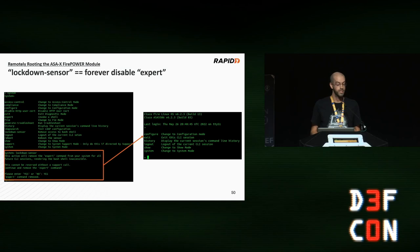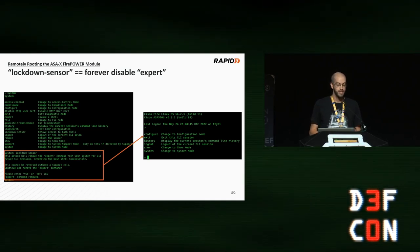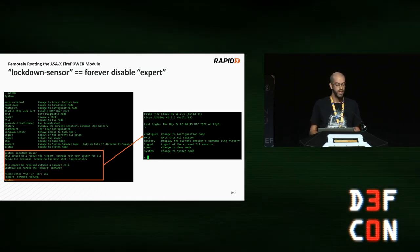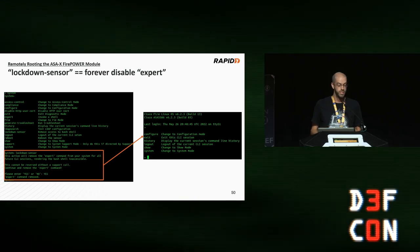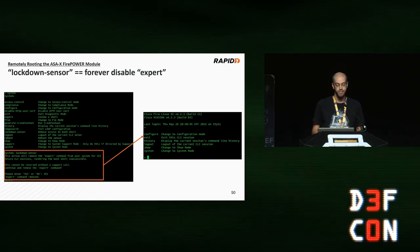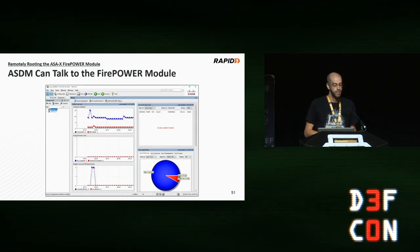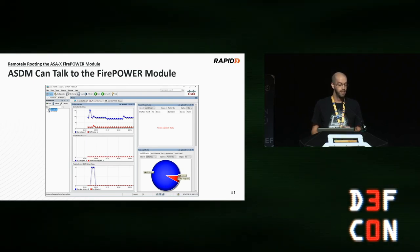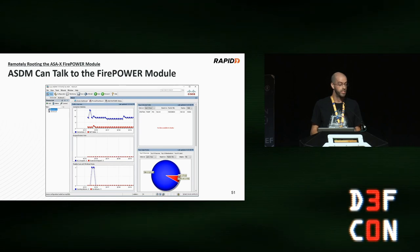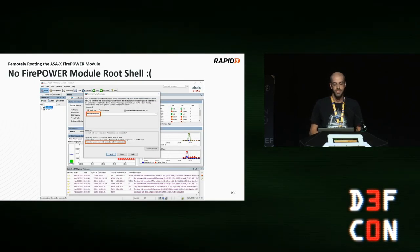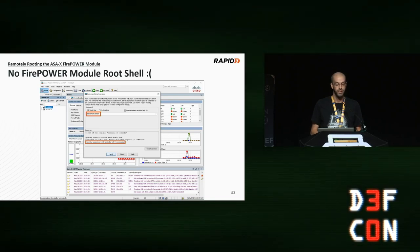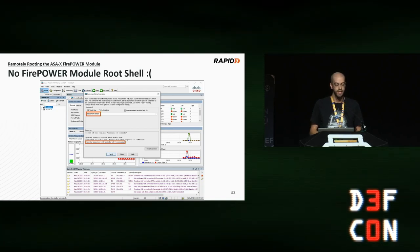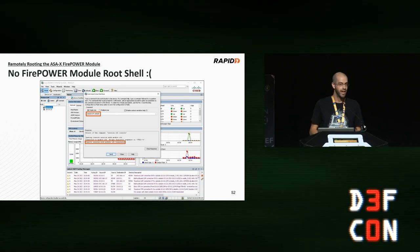Cisco obviously knows this is dangerous because they have a 'lockdown sensor' command that can disable the expert command and thus access to the root shell. But I'm not sure if this is actually used in practice — and our next exploit will bypass it anyways. I was investigating how to land in the root shell via HTTP, and it turned out ASDM can talk to the Firepower module and generate graphs, but ASDM can't access the root shell. If I use ASDM to issue 'session sfr console,' the ASA replies that you can't do interactive shells over HTTP.